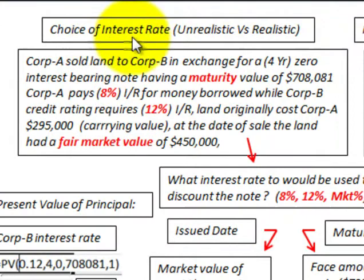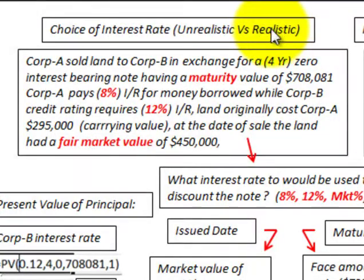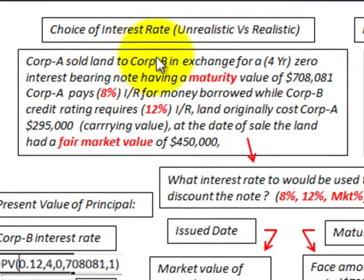Here we're going to be looking at how we would choose our interest rates — either an unrealistic interest rate or a realistic interest rate. What we're going to be doing is trying to determine the interest rate on a note that's being issued in exchange for some land.